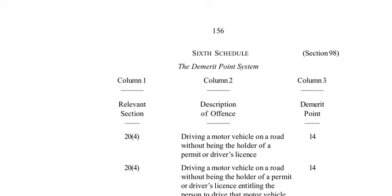We're looking at the demerit points system under the Road Traffic Act 2018, Sixth Schedule. You have the relevant sections in column one, column two — description of offenses — and column three — the demerit points. Driving a motor vehicle on a road without being the holder of a permit or driver's license carries 14 demerit points, which means suspension for a year.